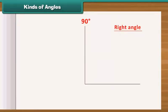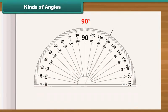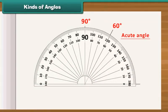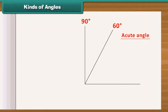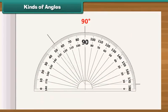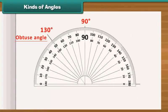An angle whose measure is less than 90 degrees is called an acute angle. While an angle whose measure is more than 90 degrees is called an obtuse angle.